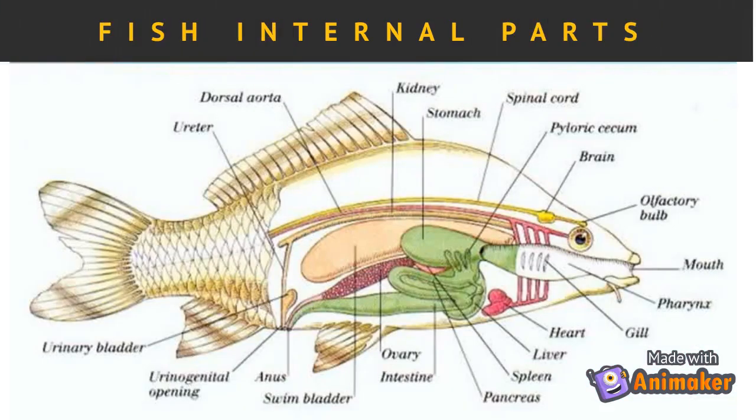This figure shows the different internal organs of the fish. These include the brain, heart, gills, swim bladder, stomach, intestines, gonads, and anus, among others.